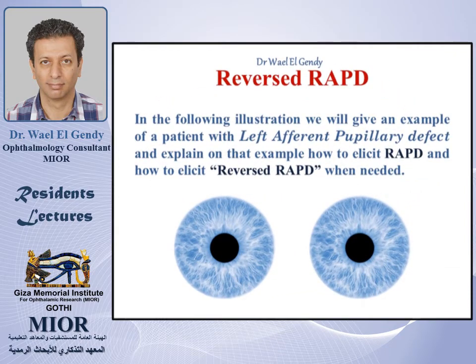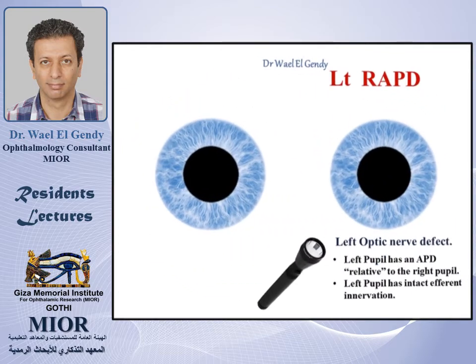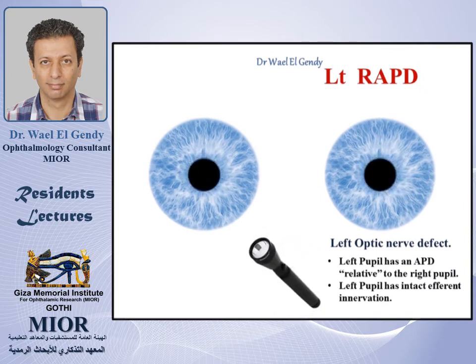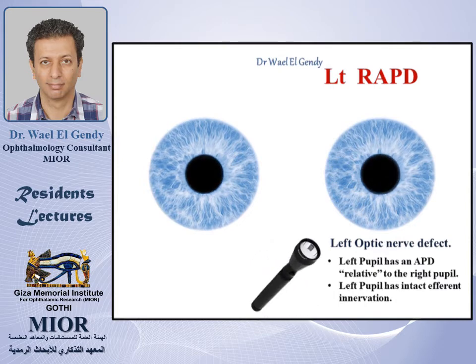In the following illustration, we will give an example of a patient with a left afferent pupillary defect and explain how to elicit a relative afferent pupillary defect and a reversed relative afferent pupillary defect. Our patient has a left optic nerve defect, which gives us an afferent pupillary defect in the left pupil relative to the right pupil.